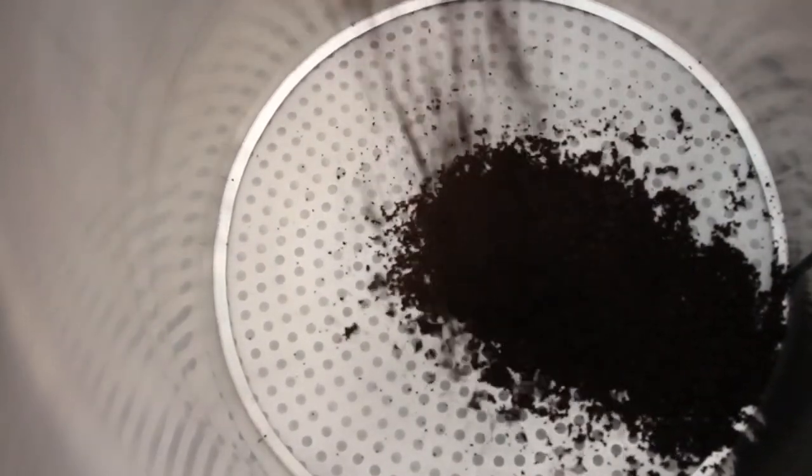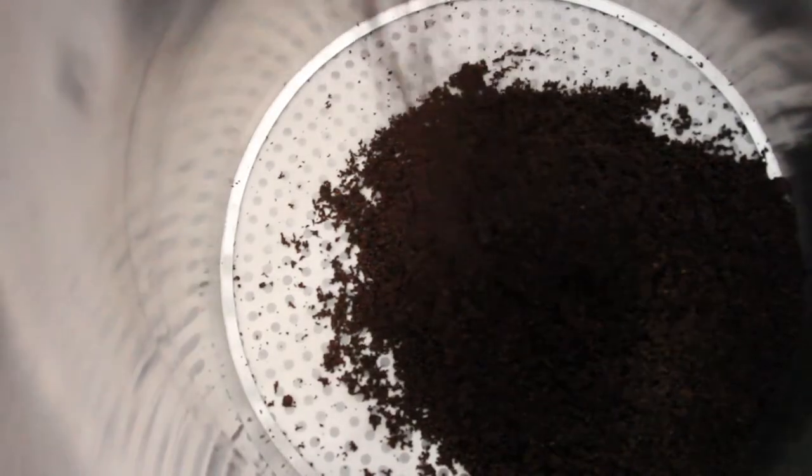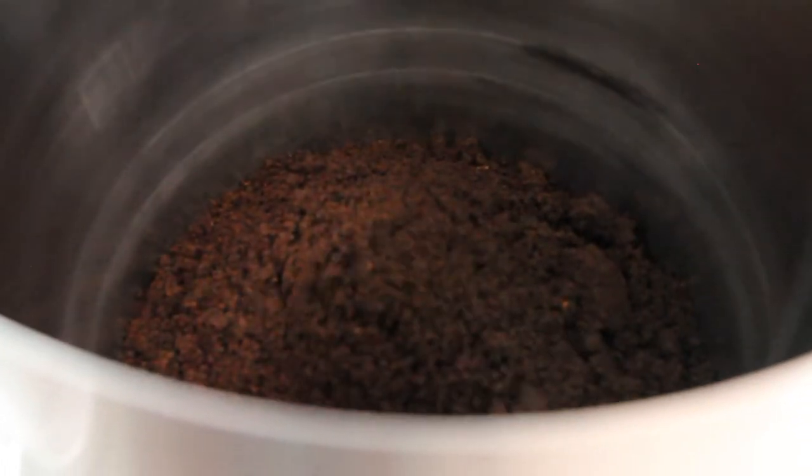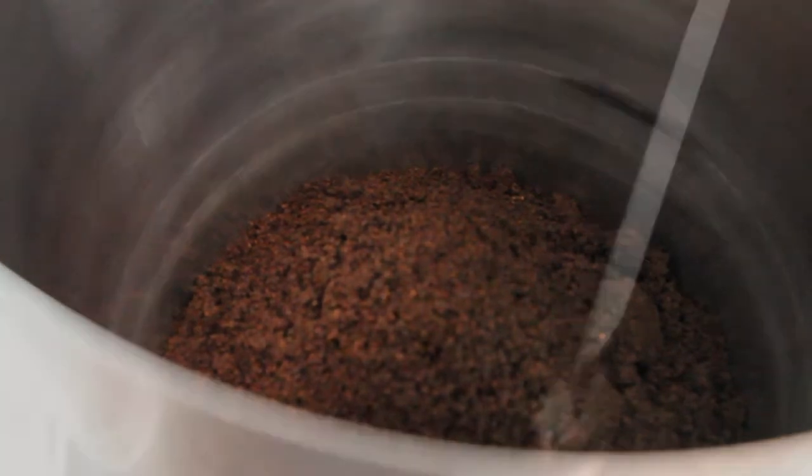After the grinds are pre-infused, go ahead and put the grinds into the brew cylinder. Once placed in the cylinder, level out the top but do not pack the grinds.